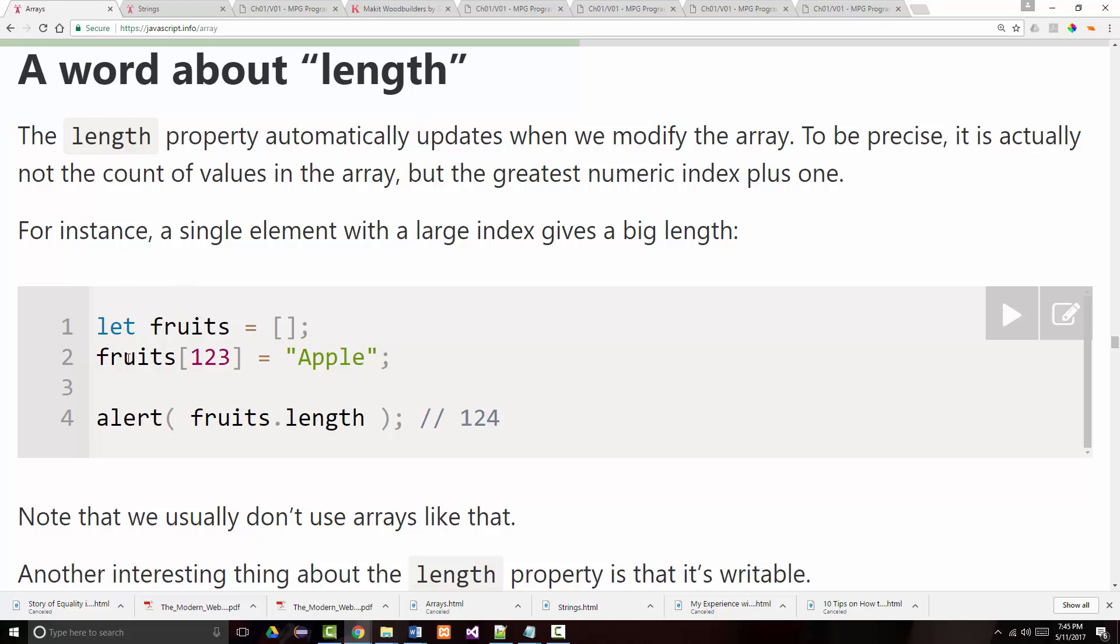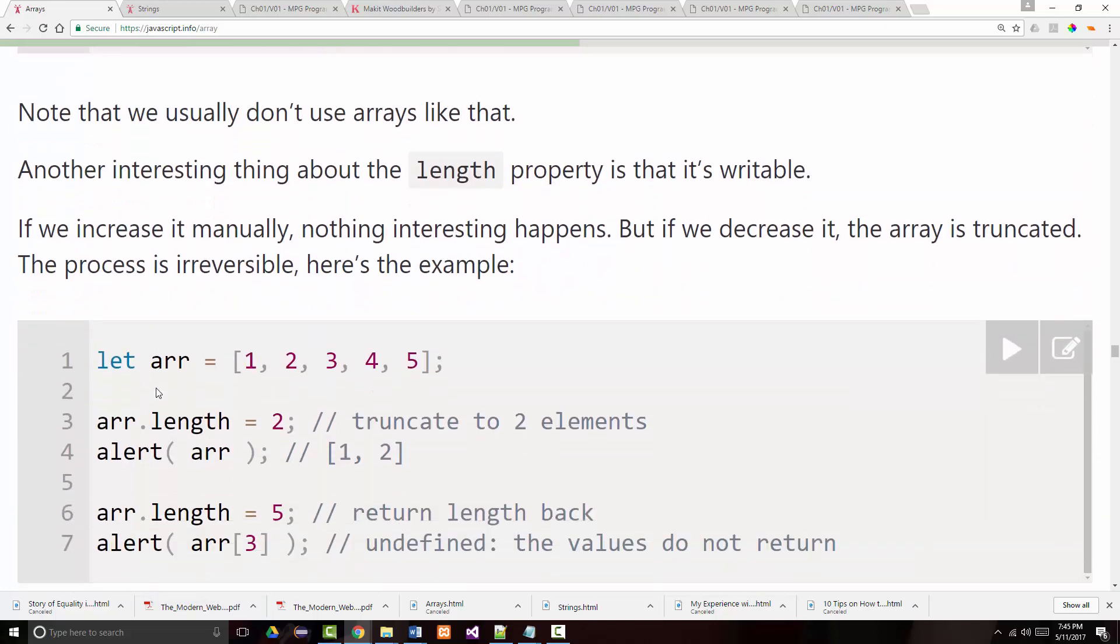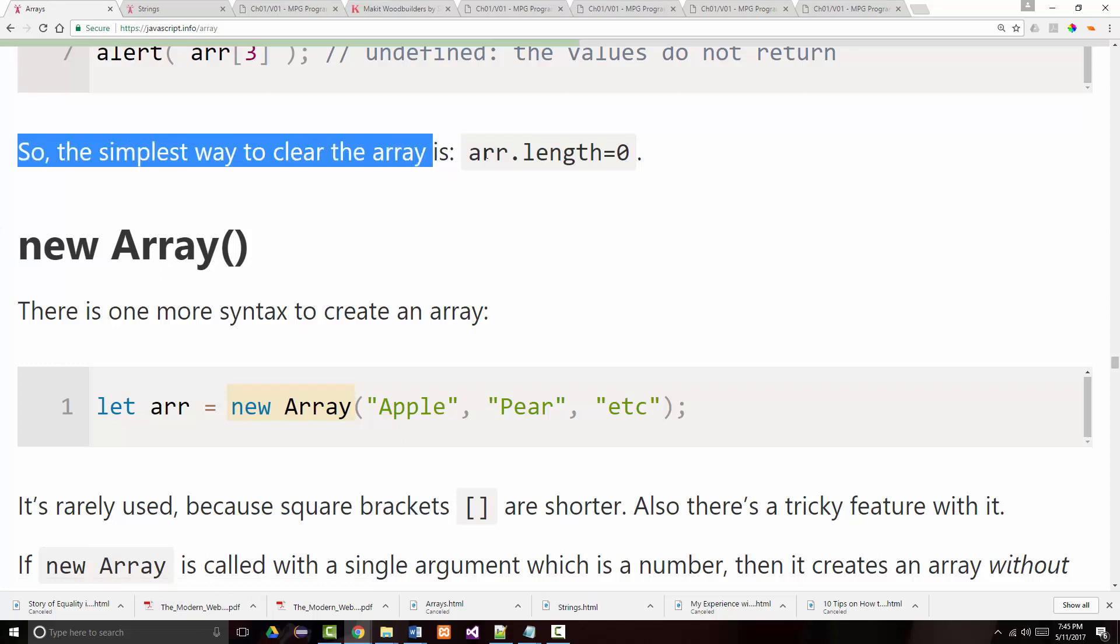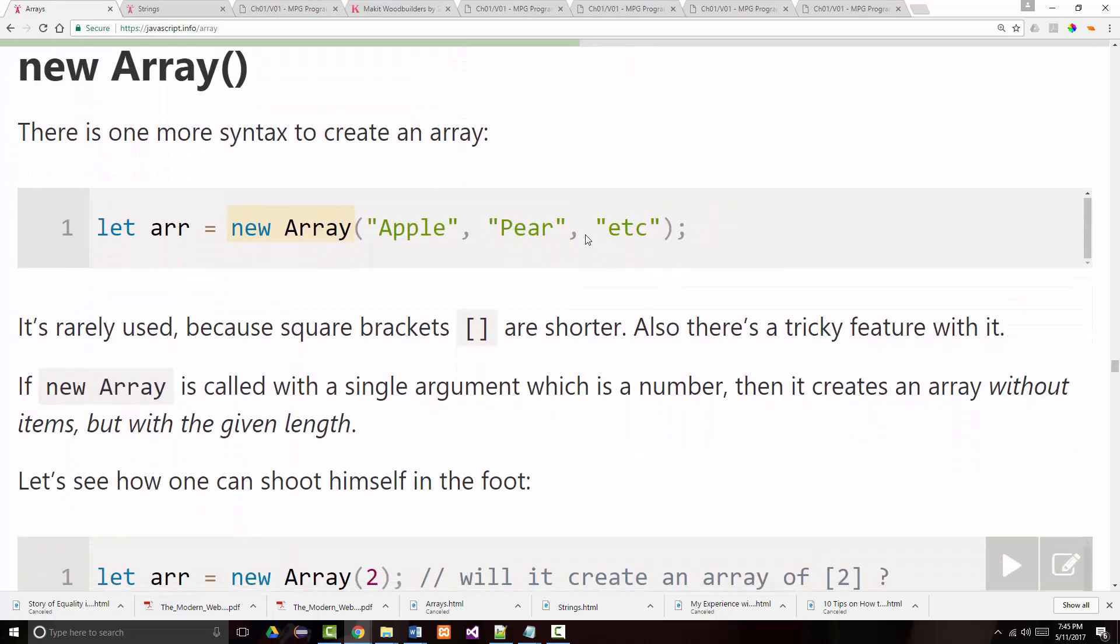We talked about the length property already. And they say that if you want to clear an array, so if you want to empty it out, you can say array, the name of the array dot length equals zero. Boom. It clears it out. It's got a zero length, so there's nothing in it. Let's stop right here, and we'll pick it up with this new array in our next presentation.